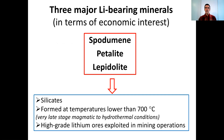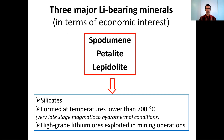Now we will see three major lithium-bearing minerals in terms of economic interest: spodumene, petalite, and lepidolite. They are all silicates, formed at temperatures lower than 700 degrees — meaning very late stage magmatic conditions or hydrothermal conditions. These three minerals are also high-grade lithium ores, and they are currently exploited in mining operations.